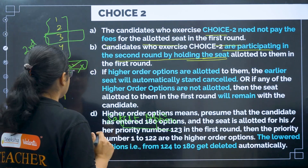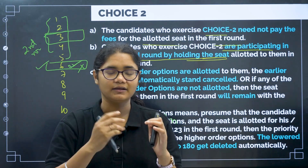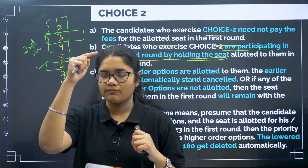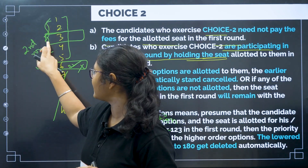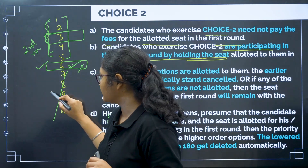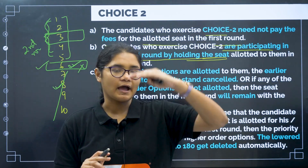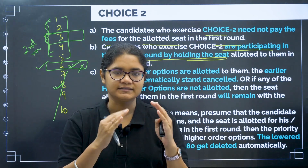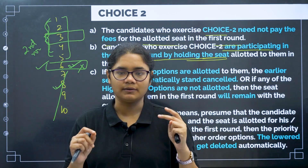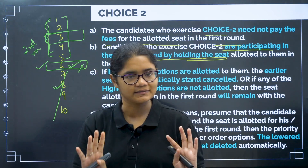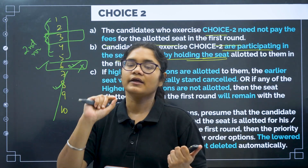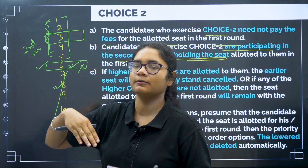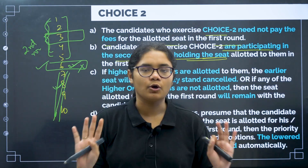One more important point for Choice 2: when you edit your options for round two, the colleges ranked below your allotted option — options seven, eight, nine, and ten — will be removed from your option entry. You can only make changes among options one to six. So if you were allotted sixth and wanted to switch to eighth in round two, that is not possible. Only higher-preference options are considered, and you can reorder or edit only those. To summarize Choice 2: you cannot choose between the second-round and first-round college; if no upgrade is allotted, your current seat remains; and only higher-ranked options stay available in your entry.